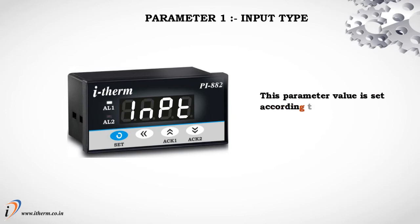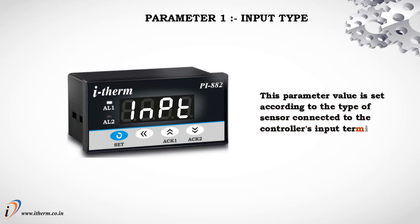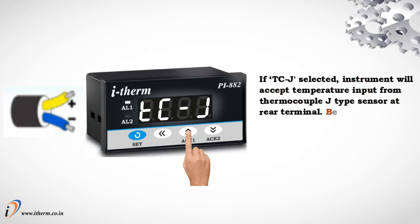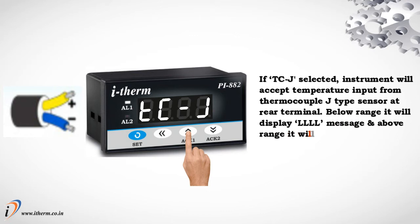Parameter 1: Input Type. This parameter value is set according to the type of sensor connected to the controller's input terminals. If TCJ is selected, the instrument will accept temperature input from a thermocouple J-type sensor at the rear terminal.